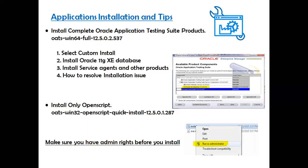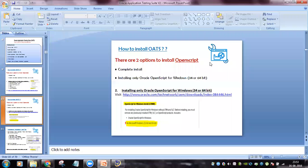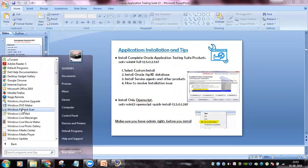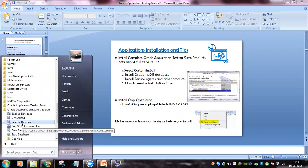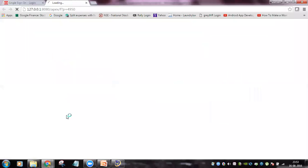Before installing Oracle Application Testing Suite, download Oracle 11g Express Edition database separately. Search for 'Oracle XE 11g download' on Google, download it, and install it. Note down the password you provide during database installation. Do not change the default port, which is 1521. Once installed, you will see Oracle Database 11g Express Edition under All Programs.